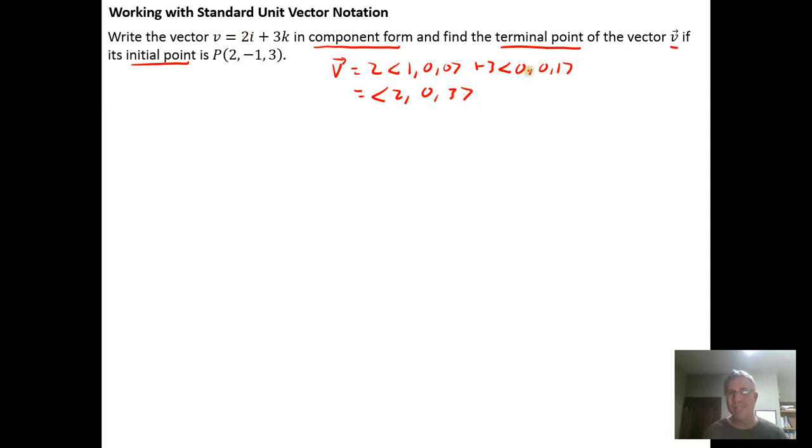And notice we didn't really need to do this. This means the x component is 2. There is no j so it's 0j, so the y component should be 0 and the z component should be 3. So we could really have gone straight to here. And so here's the idea.